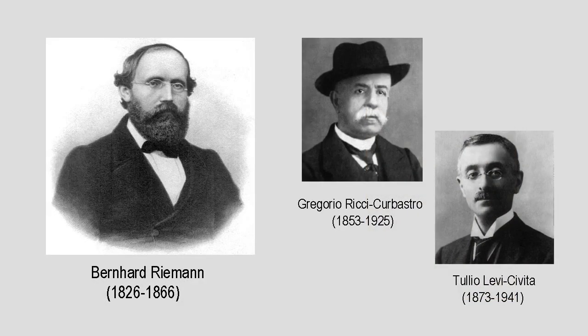Grossman told Einstein of Riemann's work and the more recent breakthroughs made by Italian mathematician Gregorio Ricci-Curbastro, often referred to simply as Ricci, and his brilliant student Tullio Levi-Civita. The two Italians had developed a new subject known as tensor calculus. Tensors are a generalization of vectors — quantities with size and direction — to any number of dimensions. The maths of tensors was to prove absolutely crucial to the formulation of Einstein's field equations, which lie at the heart of the general theory of relativity.